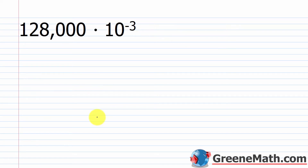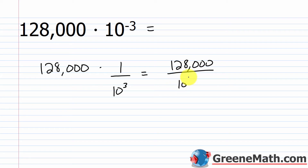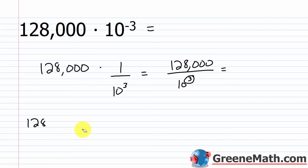Let's revisit 128,000 times 10 to the power of negative 3. That's 128,000 times 1/1000. So I take 128,000 and move the decimal point three places to the left, giving 128.